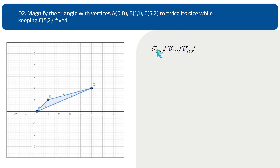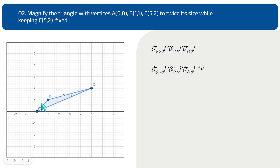All three matrices are combined into a composite matrix called M through composite matrix multiplication. We then multiply the coordinate values of triangle ABC with this composite matrix M to retrieve the final coordinates of the magnified object.